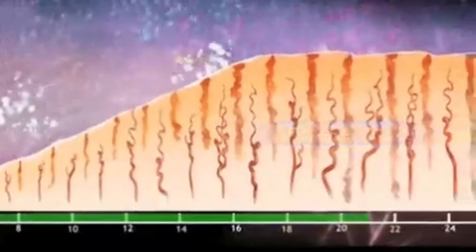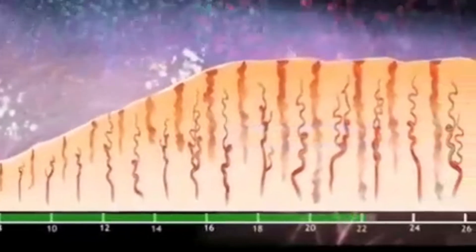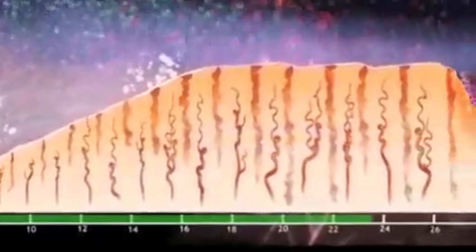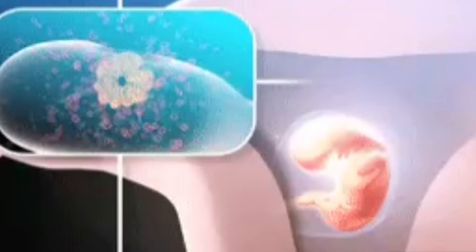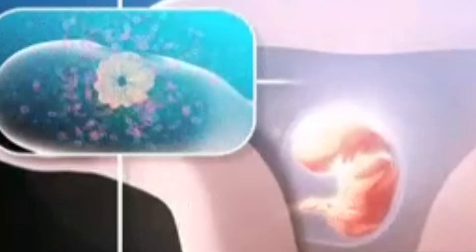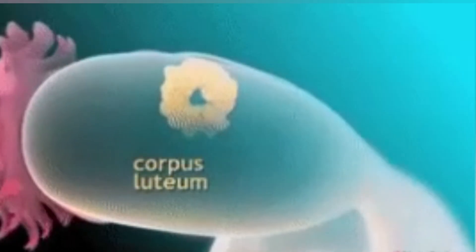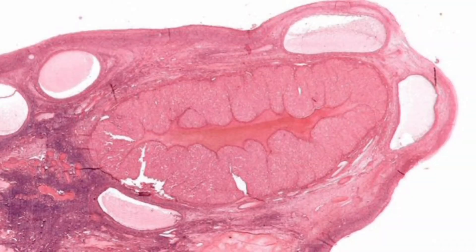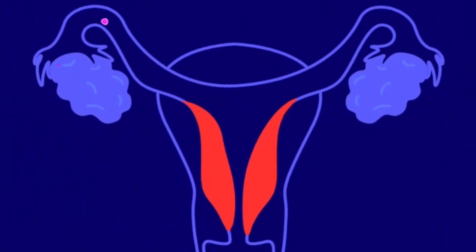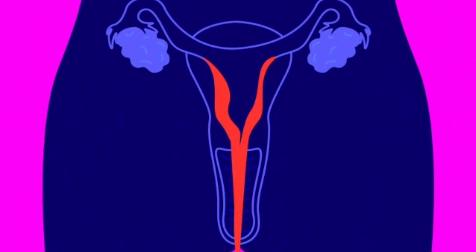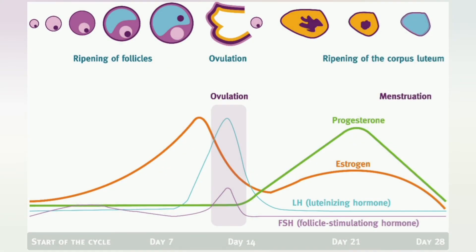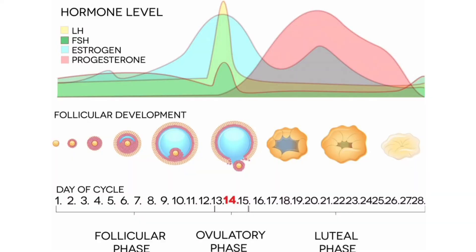The final phase is the luteal phase or secretory phase. In this phase, the ruptured follicle changes into the corpus luteum in the ovary and begins to secrete the hormone progesterone. Progesterone helps maintain pregnancy. The endometrium thickens further and its glands secrete fluid into the uterus. If the ovum is not fertilized, the corpus luteum degenerates, causing disintegration of the endometrium and leading to menstruation again. Estrogen and progesterone levels rise during this phase, which lasts for only one day.